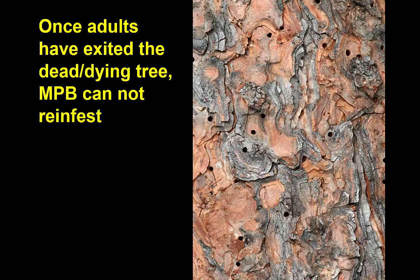Once adults have exited, they come out through a little hole not much wider than a pencil lead, indicating the insect is done with the tree. Mountain pine beetle will not attack a dead tree — once they've killed a tree, they have one generation on the tree and they're done. Once you see those little exit holes, you know the insects have left and are no longer associated with that tree. Other insects will move into a dead pine, but mountain pine beetle is only capable of developing in a living pine that it then kills.